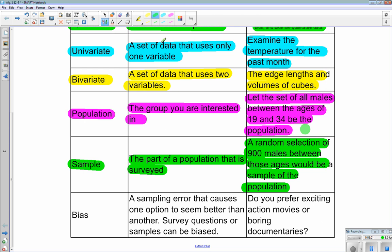And our last vocabulary word is bias. A sampling error that causes one option to seem better than another. Survey questions or samples, so the group you choose to survey, can be biased. For example, when you ask somebody's opinion, you ask, do you prefer exciting action movies or boring documentaries? So the way this word is stated has a bias.